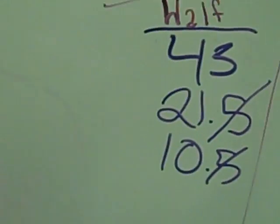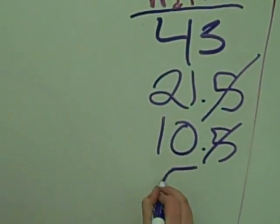And half of 10 is 5. And 128 doubled is 256.